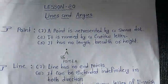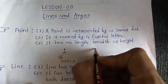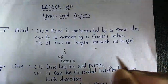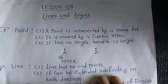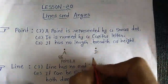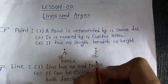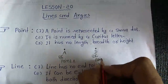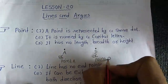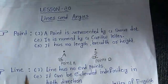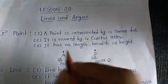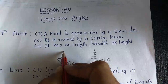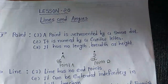Next: ye point hai, uska name dena hai — D. Capital letter mein hi uska name de sakta hai. Second method se usse likh sakta hai: point D. Third property: it has no length, breadth or height. Ye point hai, usko length bhi nahi hai, breadth bhi nahi hai, or height bhi nahi hai.